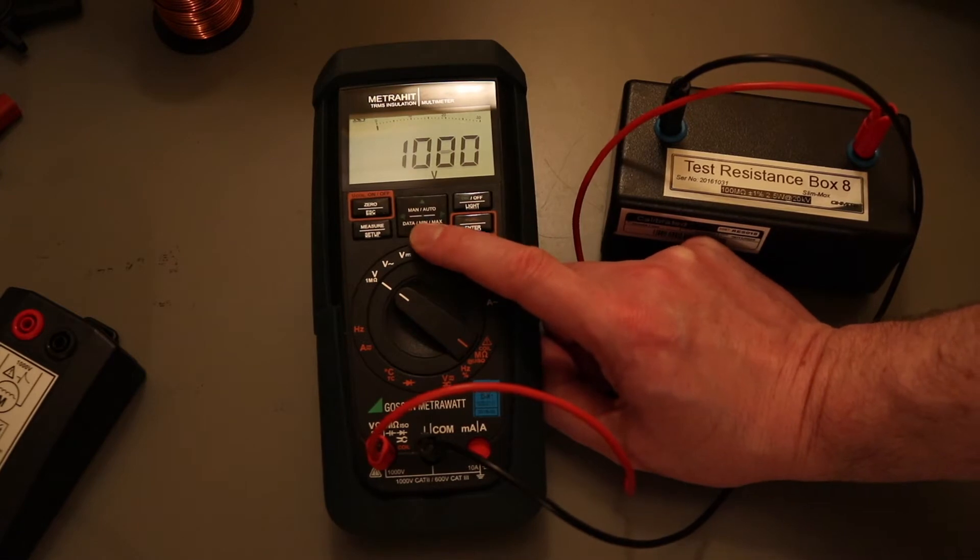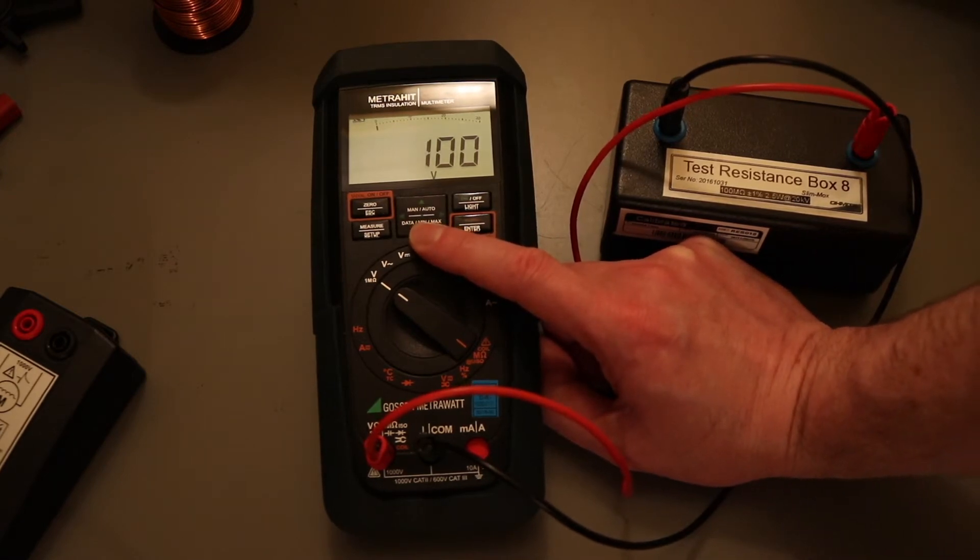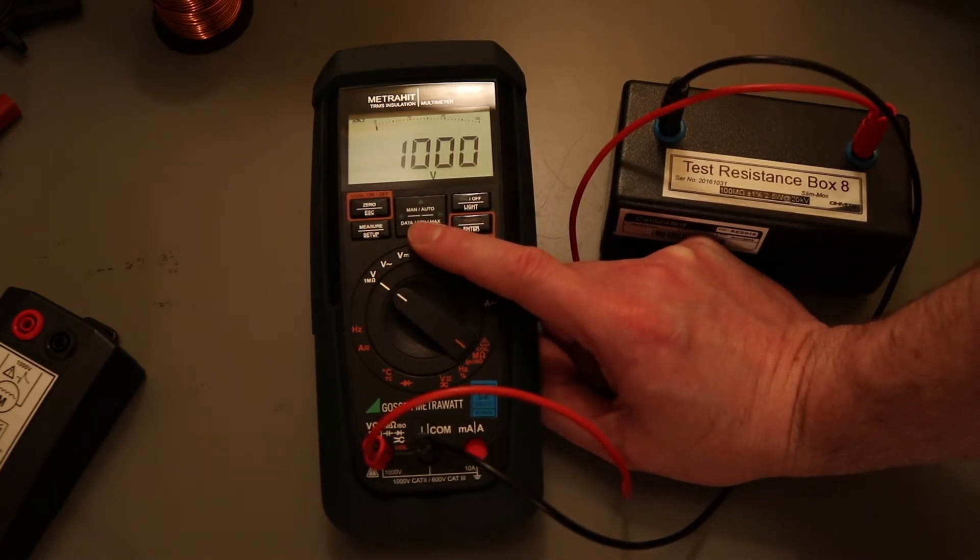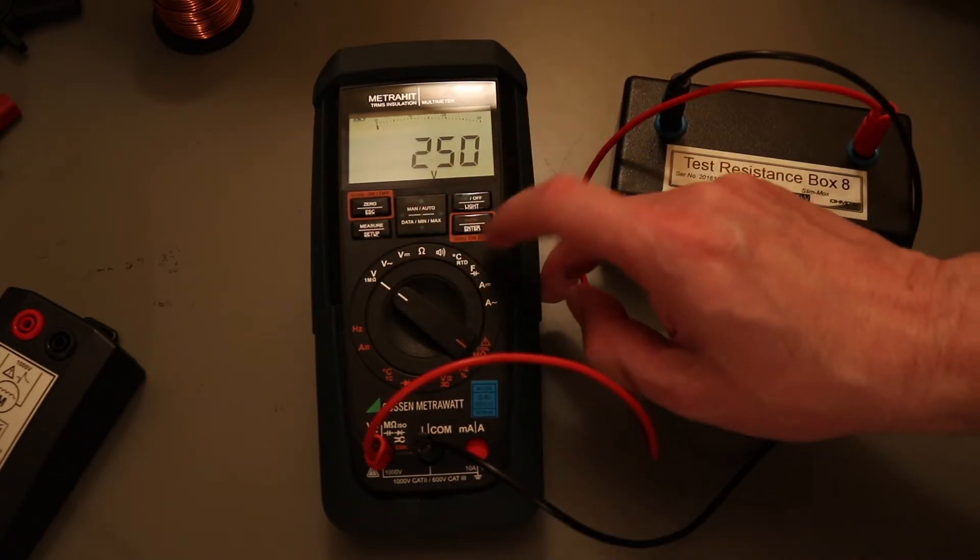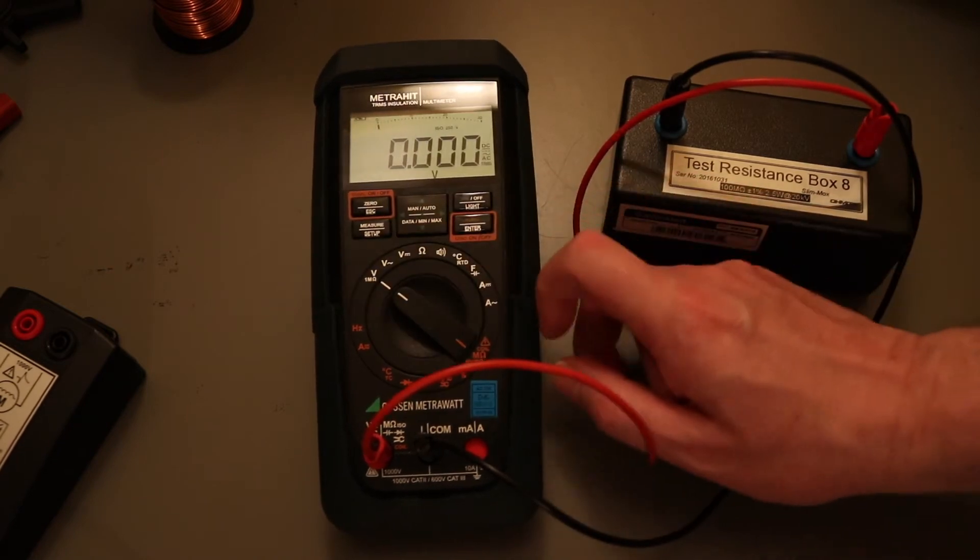And then you can cycle through these but only the fixed range. There's no variable voltage in between these fixed values. And as soon as you've selected it, enter it, and then back to measurement.